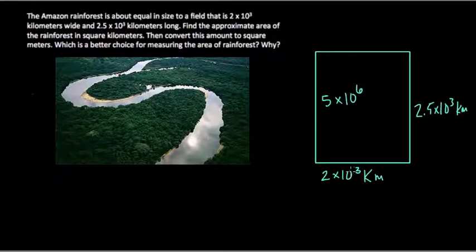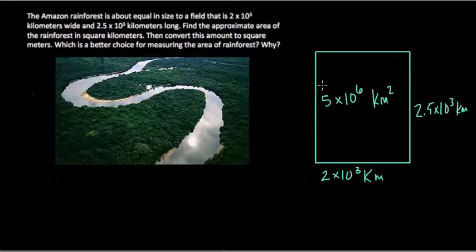We're multiplying 2 powers of 10, same base, add the exponents. And a kilometer times a kilometer is a kilometer square. Just like x times x is x squared. So we can say that the total area of the rainforest is about 5 times 10 to the 6th kilometers squared. And this is an estimation. It could be a little bit larger or smaller, depending on the way you estimate it.